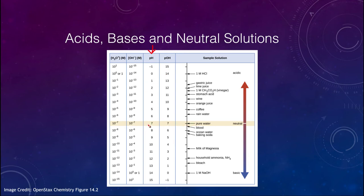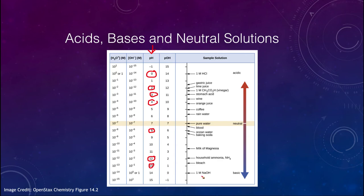A neutral solution like pure water has a pH of 7. Orange juice is acidic with a pH around 4, stomach acid around 3, lime juice around 2, and 1-molar hydrochloric acid has a pH of 0 — extremely acidic. On the basic side, baking soda is around 8, ammonia near 12, bleach around 13, and 1-molar sodium hydroxide has a pH of 14. Note that ocean water is slightly basic and rain water is slightly acidic.